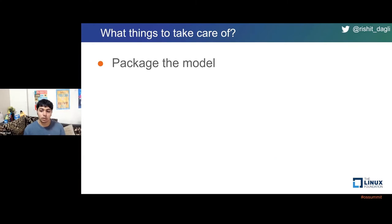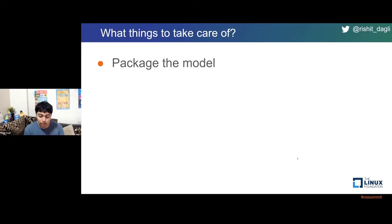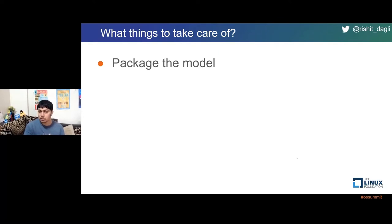The first thing you need to do is package the model. You ideally don't want a Jupyter notebook out there for deployment. What you want to do is export the model in a way that is optimized and from which you can make predictions. Users can use the model — so you need to package the model in a way users can use it, not just some directories of experiments.